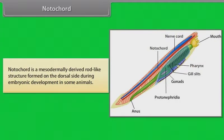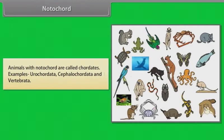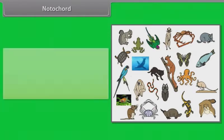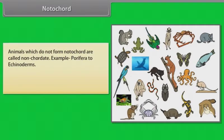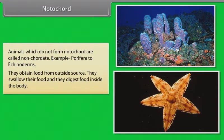Notochord is a mesodermally derived rod-like structure formed on the dorsal side during embryonic development in some animals. Animals with notochord are called chordates — example: Urochordata, Cephalochordata and Vertebrata. Animals which do not form a notochord are called non-chordates — example: Porifera to echinoderms. They obtain food from an outside source, swallow their food, and digest it inside the body.